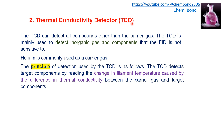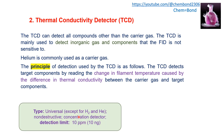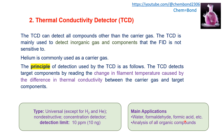The second detector is the thermal conductivity detector (TCD). TCD can detect all compounds other than the carrier gas. It is mainly used to detect inorganic gases and components that FID is not sensitive to, such as compounds FID cannot detect. The principle of TCD is that it detects target compounds by reading a change in filament temperature caused by the difference in thermal conductivity between the carrier gas and the target component. It is a universal, non-destructive, concentration detector with a detection limit of 10 ppm. Main applications include water, formaldehyde, formic acid analysis, and analysis of all other organic compounds.